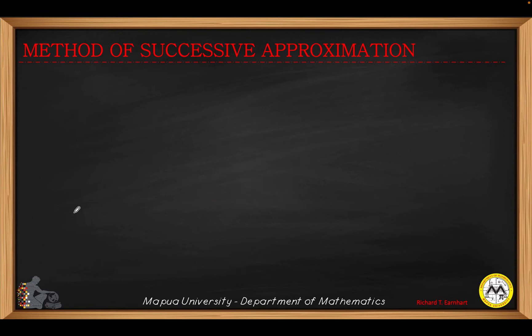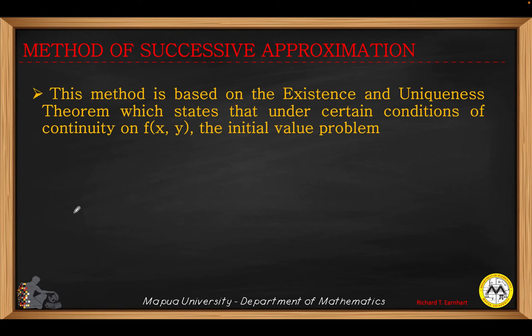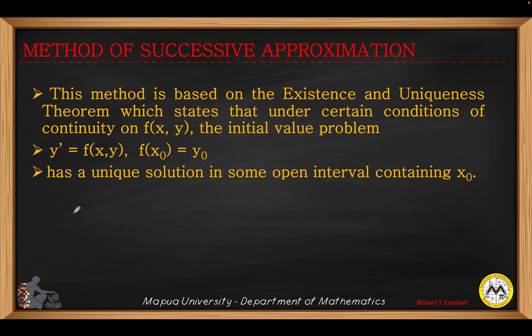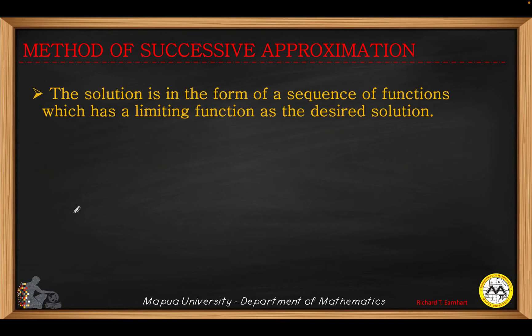Now we go to the method of successive approximation. The method is based on the existence and uniqueness theorem in differential equations, which states that under certain conditions of continuity on the function f of x, y, the initial value problem y prime equals f of x, y with initial values x₀, y₀ has a unique solution in some open interval containing x₀. The solution will be in the form of a sequence of functions which has a limiting function as the desired solution.